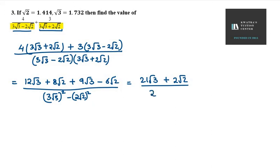At the bottom, we will have 27. 3² is 9, (√3)² is 3 only, so 27. At the other side, you have 8. So 27 - 8 is 19. So you get (21√3 + 2√2)/19.